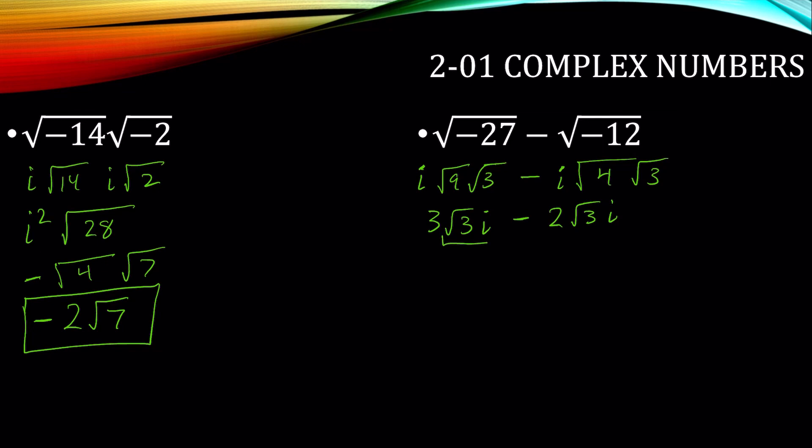And so now the underline part is my like term. So I have 3 minus 2 of them, leaving 1 of these square root of 3i's. Again, there's 3 of the square root of 3i's minus 2 of the square root of 3i's. So we have 1 square root of 3i.